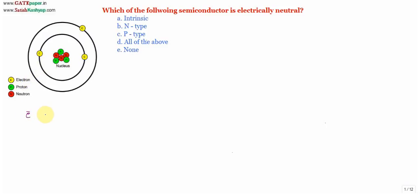The charge of an electron is −1.6 × 10⁻¹⁹ coulombs, whereas the charge of a proton is +1.6 × 10⁻¹⁹ coulombs. Only the sign is different; the magnitude is the same. Since every atom consists of equal numbers of electrons and protons, the atom is electrically neutral. So the very important statement is: every atom is electrically neutral.